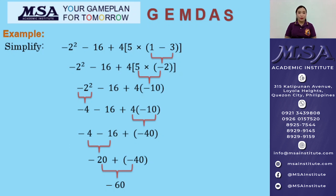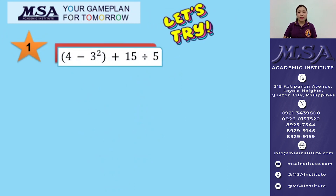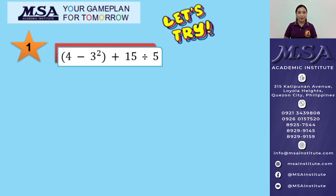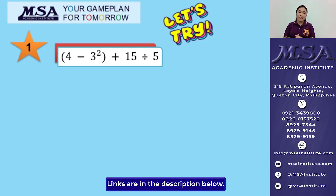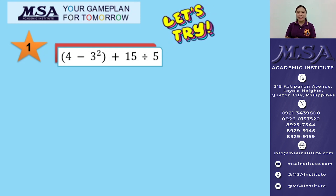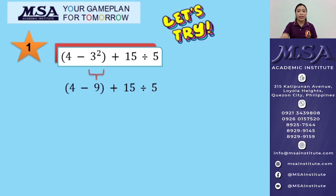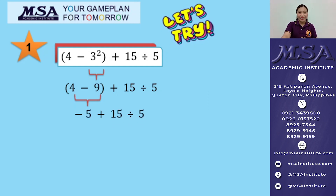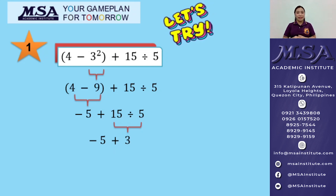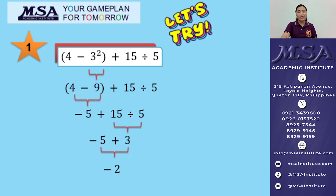That is how the GEMDAS rule works. Now try to apply the GEMDAS rule to this problem: 4 minus 3 squared plus 15 divided by 5. Start with the grouping symbol — we have 4 minus 3 squared, but before we subtract, we simplify 3 squared to get positive 9. Then 4 minus 9 gives us negative 5. Next, we divide 15 by 5 to get positive 3. The final step: negative 5 plus 3 gives us negative 2. So the final answer is negative 2.